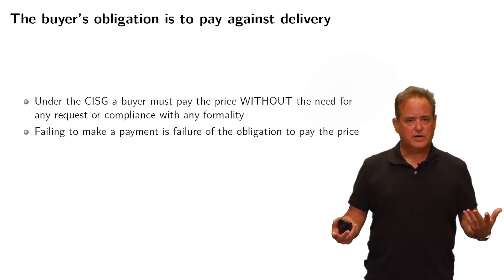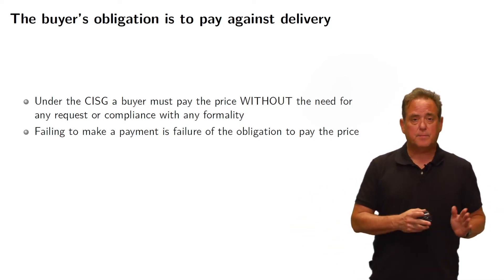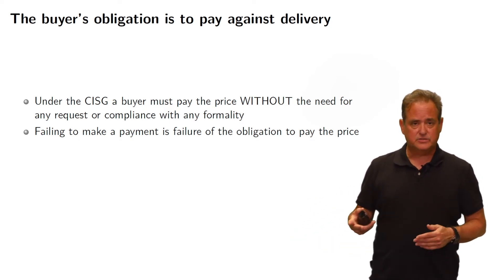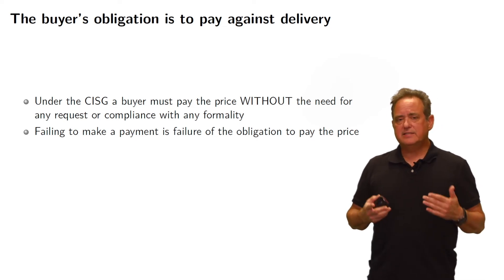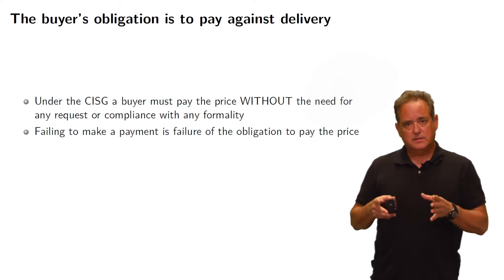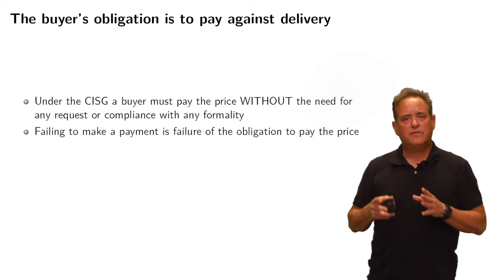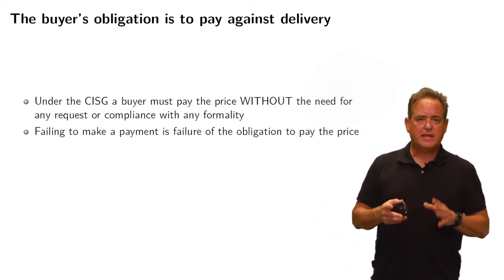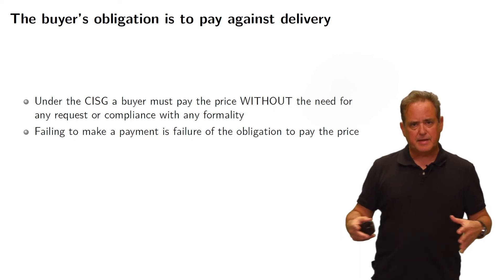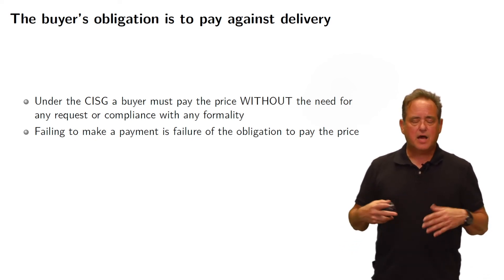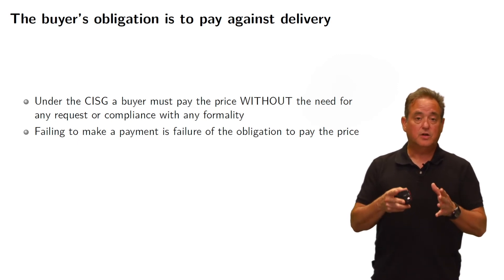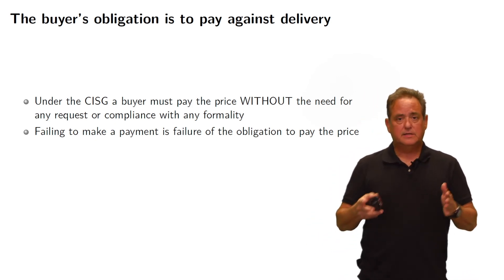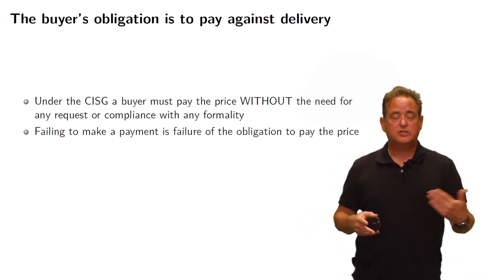In the case of an installment contract, in which there are several payments to be made — maybe you're going to pay for the goods in four separate cases on four different dates — the CISG says that failing to make one payment is a breach. It's a failure of the obligation to pay the price. So failing to make even one payment, where payment is supposed to be made over time, is as if you did not make any payments in terms of whether a breach has occurred. Failing to make a payment is a breach of the obligation to pay the price.